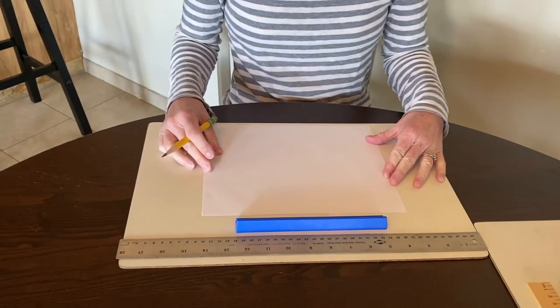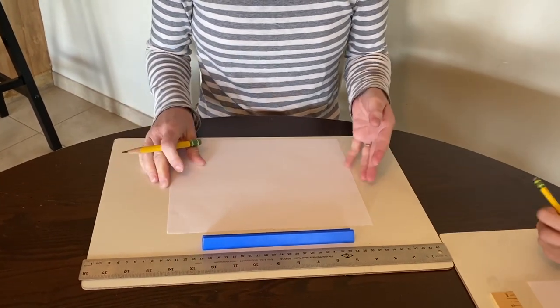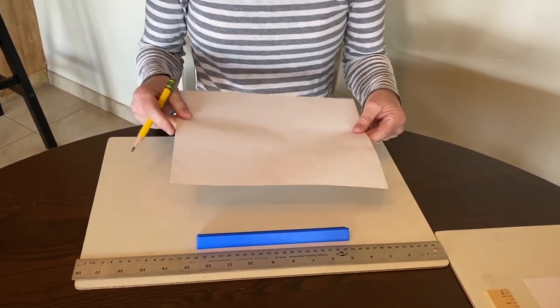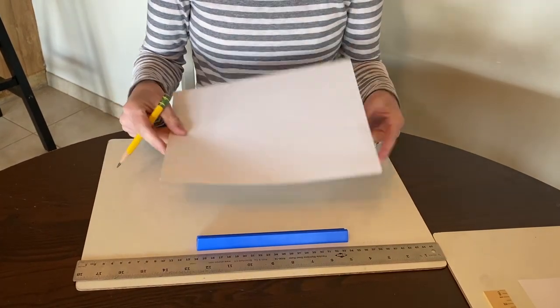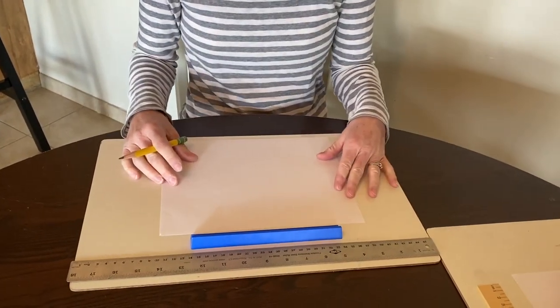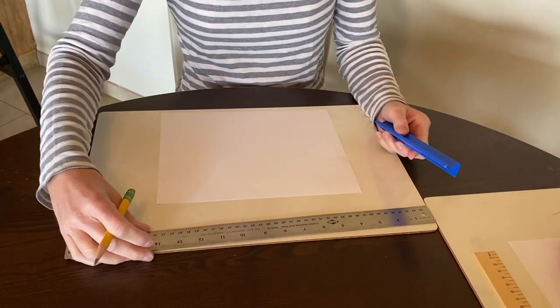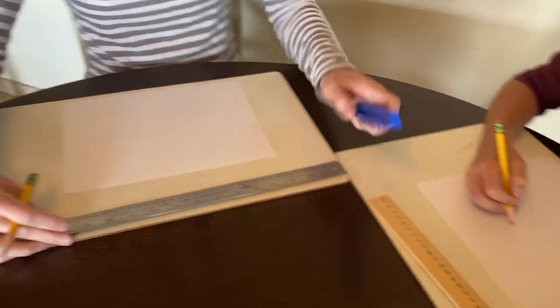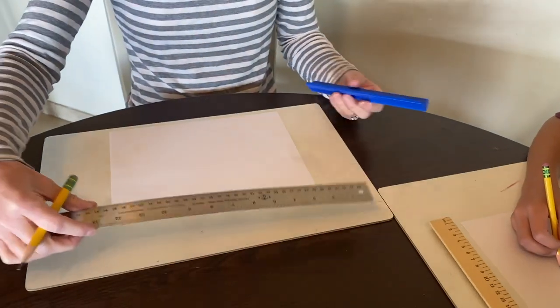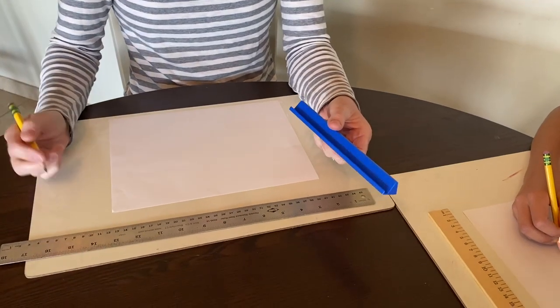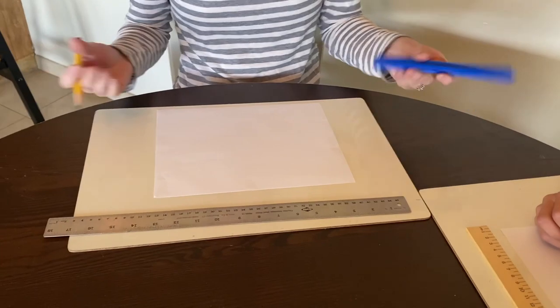The first thing that you need for this project is a pencil, simple and easy, and a white piece of paper. I'm just using a piece of xerox paper, printer paper. Any size paper you have for this project, it doesn't matter at all. You also need a ruler or a straight edge of some sort. We have three different rulers here: a little wooden ruler, a nice giant ruler, and just a part of a game because it's a straight edge. Whatever you have available is fine.